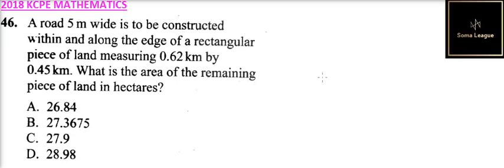Question number 46. A road 5 meters wide is to be constructed within and along the edge of a rectangular piece of land measuring 0.62 kilometers by 0.45 kilometers. What is the area of the remaining piece of land?